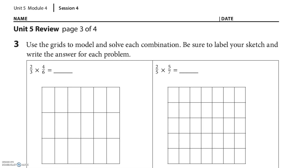Use the grids to model and solve each combination. Be sure to label your sketch and write the answer for each problem. So, 2 thirds — first of all, I'm going to find a side with thirds, and so that's this side right here, that's 2 thirds. And then the side with 4 sixths is right here, 4 sixths, and then I'm going to write it kind of sideways, and then I'm just going to color in everything that's matched up.